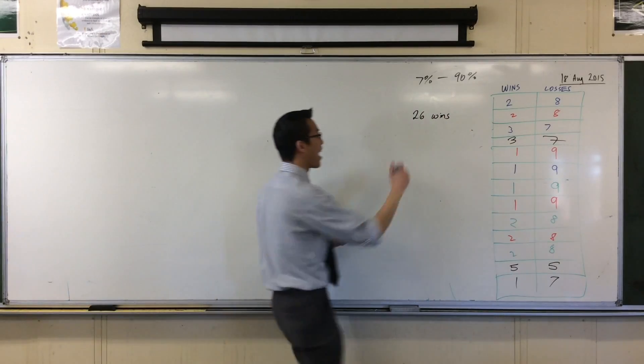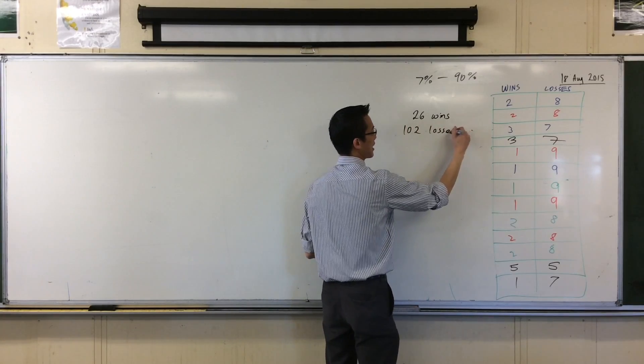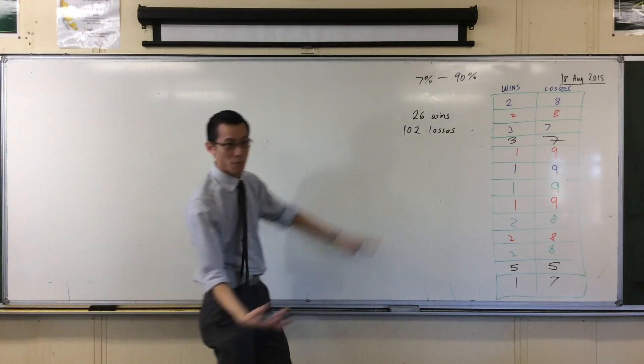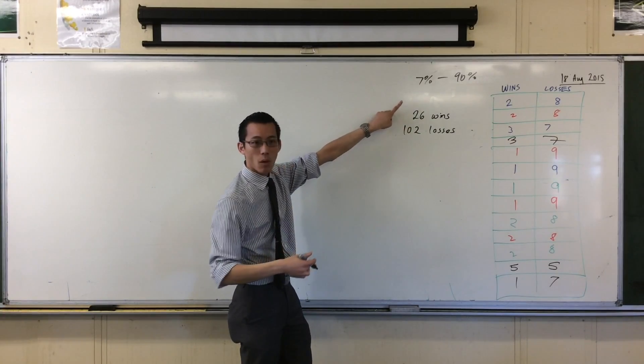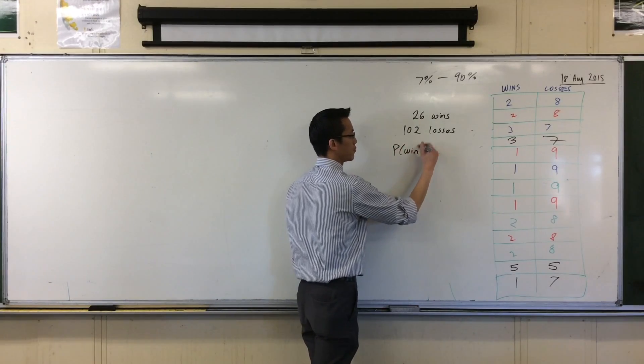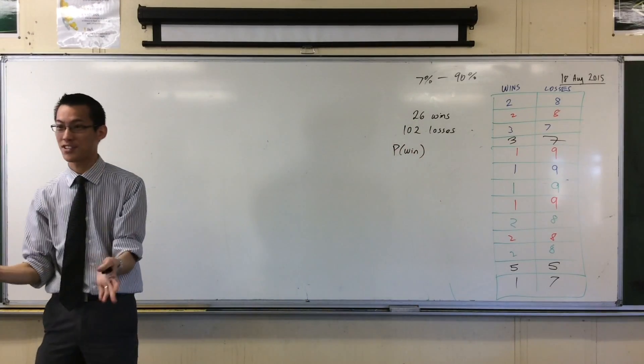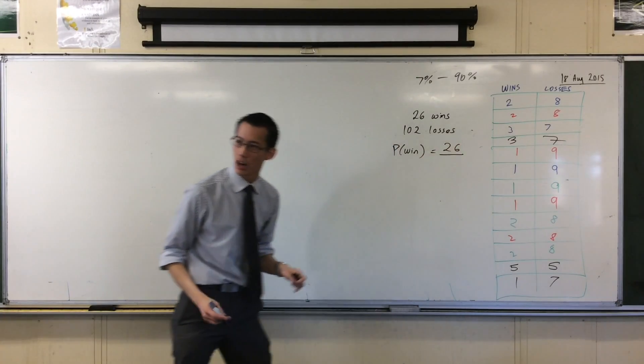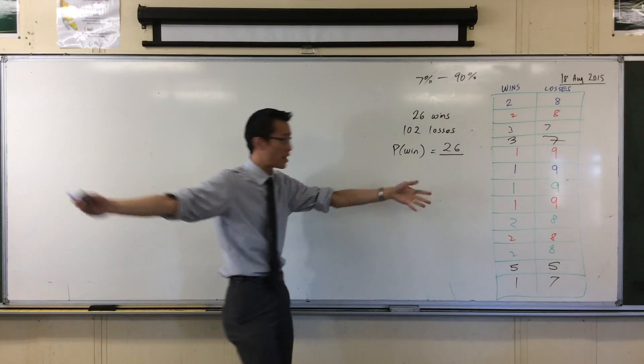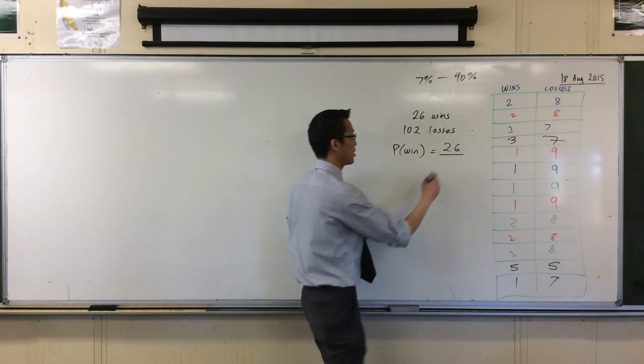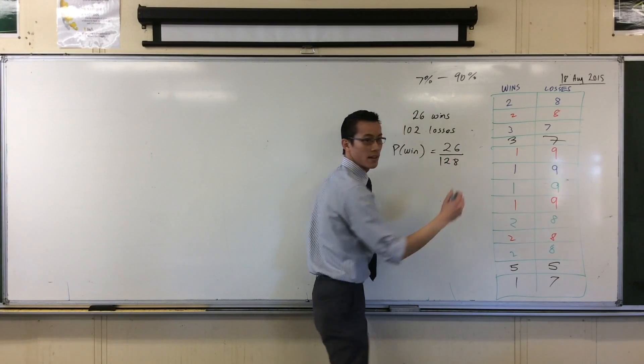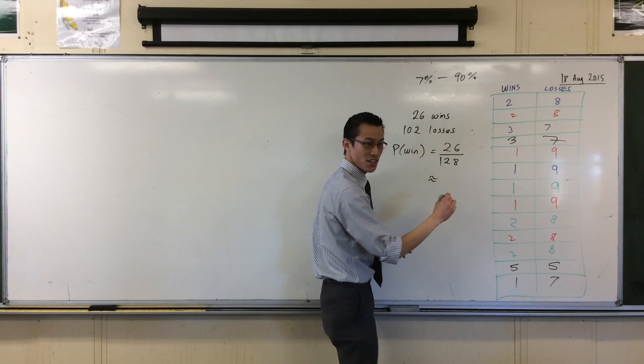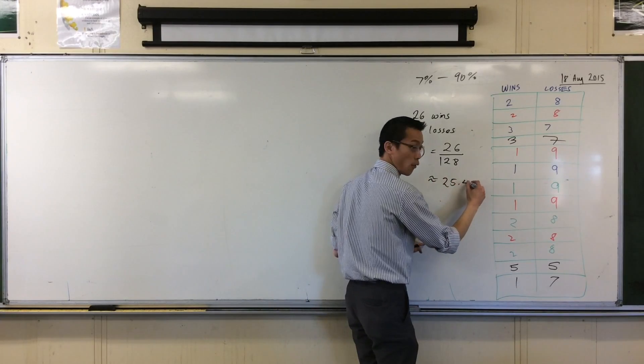Now pause for a second. I'm interested in the chance, the probability. I asked you about wins, not losses, even though they're kind of the same thing. The probability of a win through this experiment that you guys have just done, the favorable outcomes are 26. What goes on the denominator? It's going to be the total sample space, the number of times we played games, which is 128.